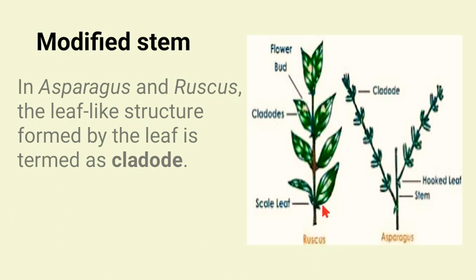In Asparagus and Ruscus, there are leaf-like structures, but they are not true leaves — they are stems modified into leaf-like structures called cladodes. The true leaves are highly reduced and they are scale leaves.